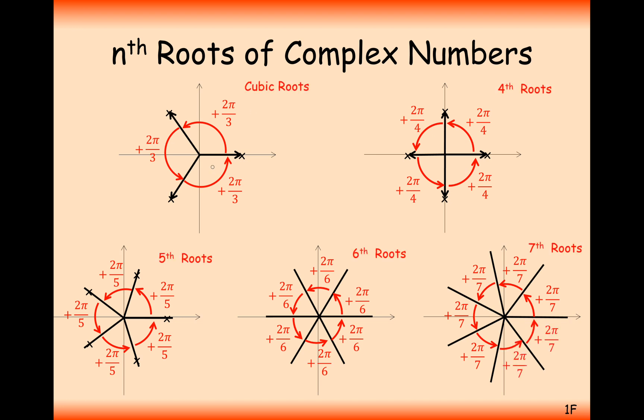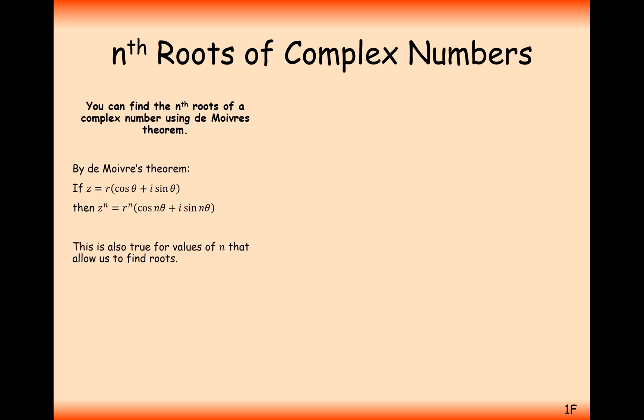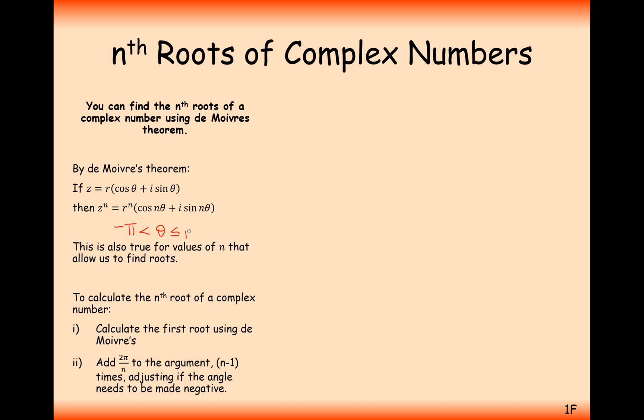So we'll get cubic roots, add 2π by 3, fourth roots, add 2π by 4, and you've noticed that you just do 2π divided by the number of roots you want. You're dividing it by the number of roots you want because you want to divide your circle into that many sections. So what can we say then? We can say that to calculate the nth root of a complex number, the first thing you'll do is you'll calculate the first root using de Moivre's theorem, and the second thing you'll do is you'll add 2π by n to the argument n minus 1 times, adjusting if the angle needs to be made negative, or if it goes outside of that range from minus π to π. Make sure your argument is in that range for final answers.